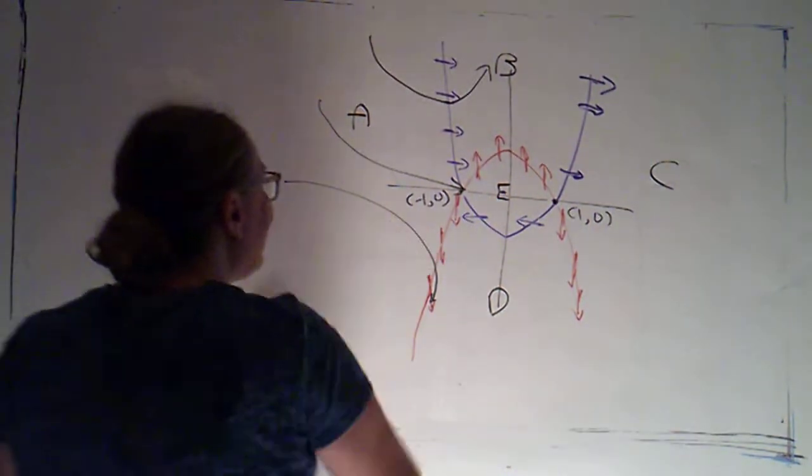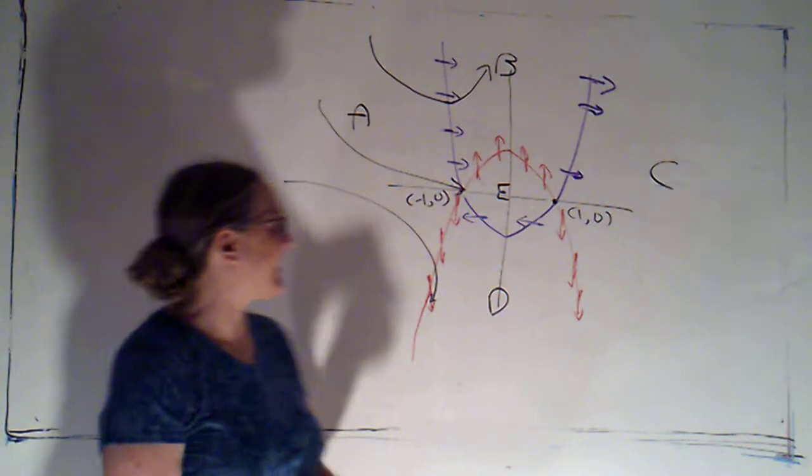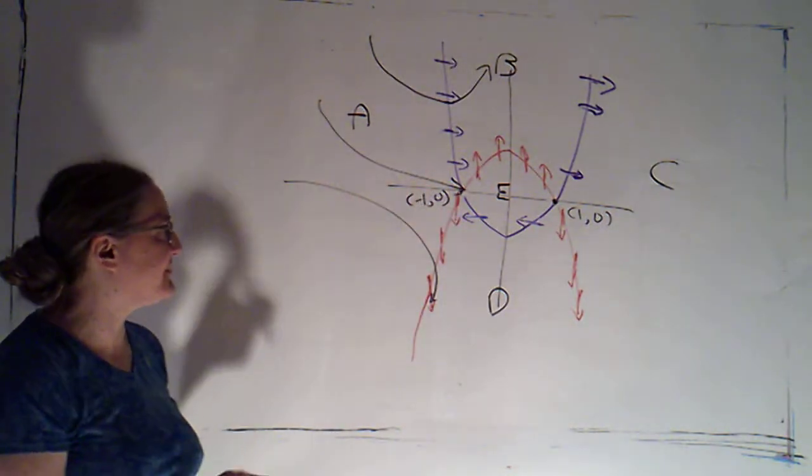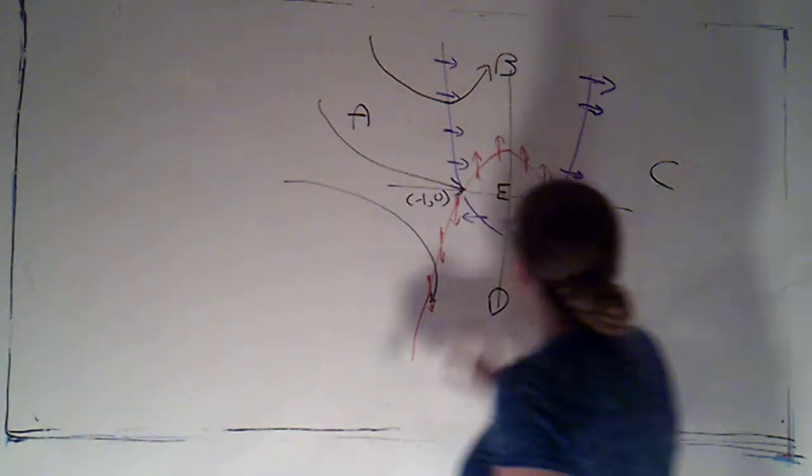Okay, so we're continuing our look at the phase portrait for this. I've got the null clines drawn with their beautiful arrows and we're up to region B.